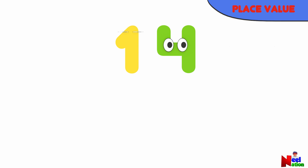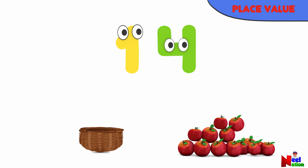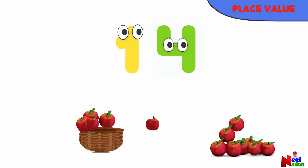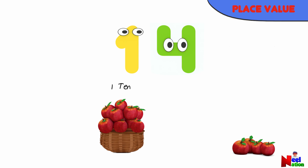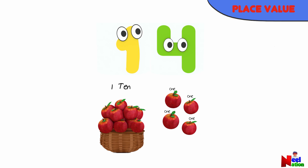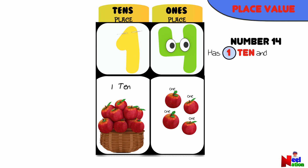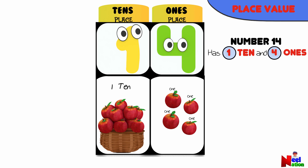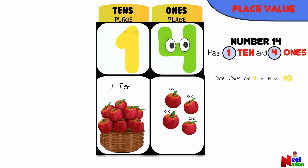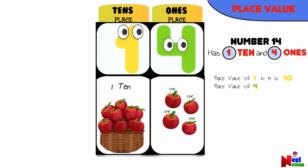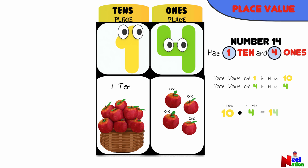How about the number 14? Let's use some apples to help you. Let's make groups of tens by placing 10 apples in the basket. Let's count the rest of them — there are four individual apples. So we have 1 ten and 4 ones. The place value of the digit 1 in the number 14 is 10, and the place value of 4 is 4. So 10 plus 4 makes a total of 14.